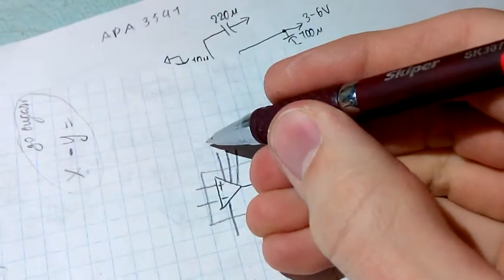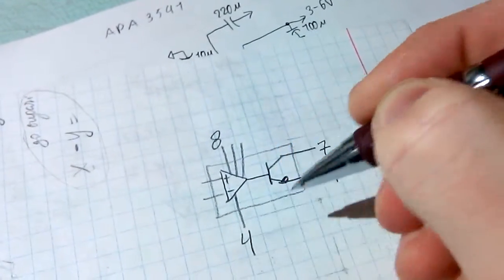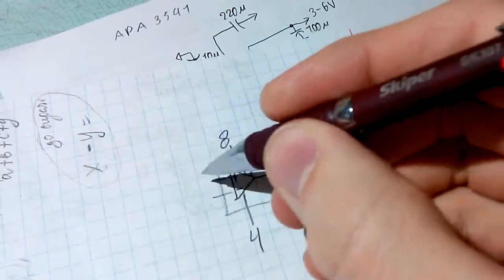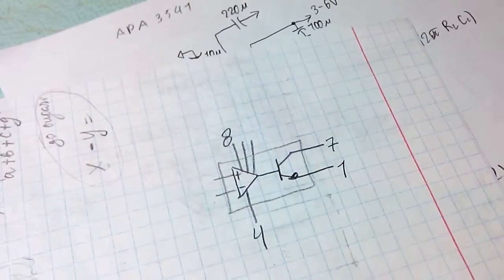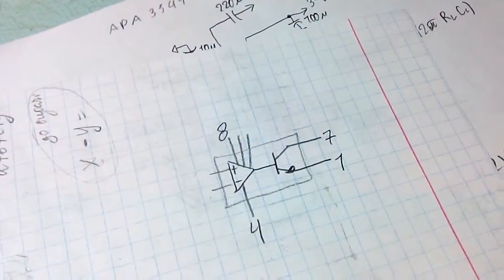Of course, the supply is pretty much usual: positive supply pin 8, ground pin 4, and pins 2 and 3, or 3 and 2, I can't remember correctly. Well, the bizarre thing is that it lights up an LED.